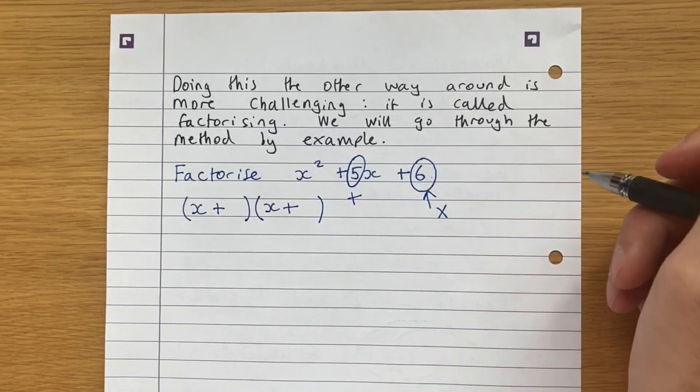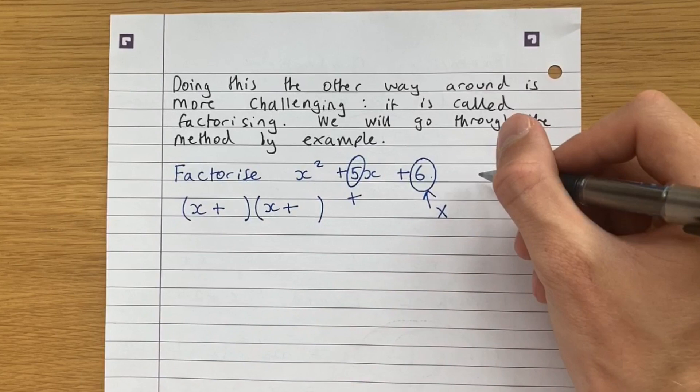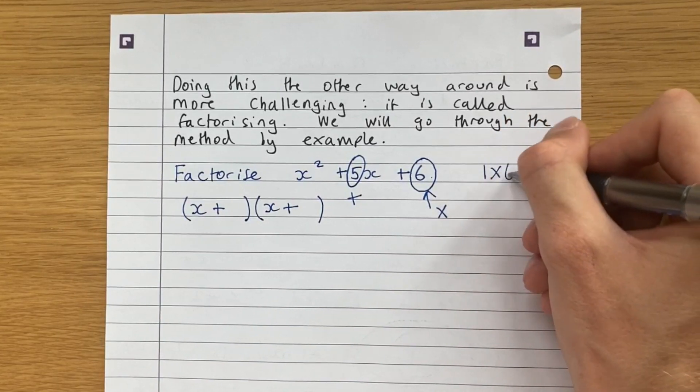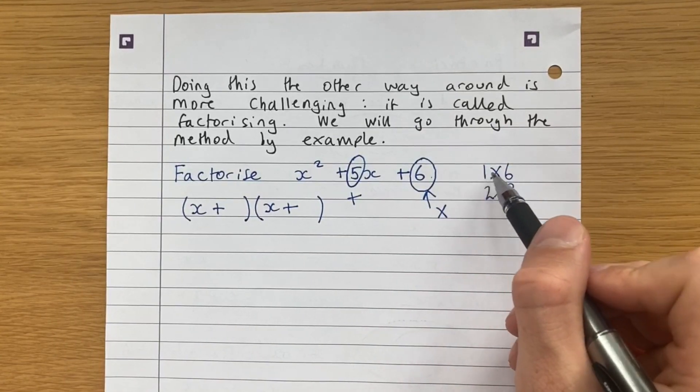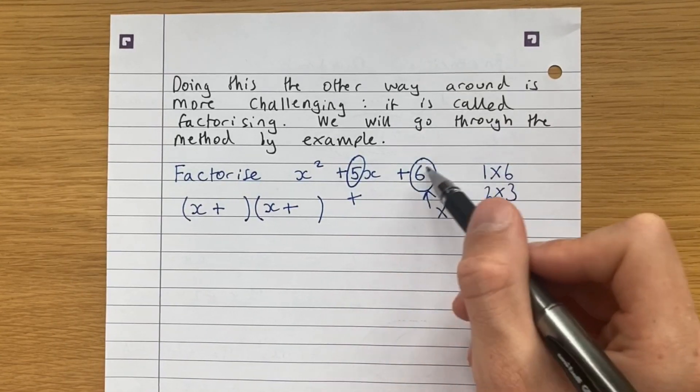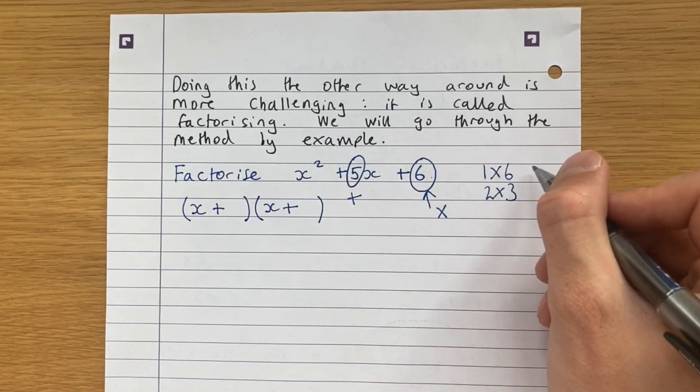So the way we do this is we write out all the factors of 6. So the factors of 6 are we could have 1 times 6 or we could have 2 times 3. And what we notice here is that 1 times 6 is 6, yes, but 1 plus 6 is not equal to 5. So it can't be this.